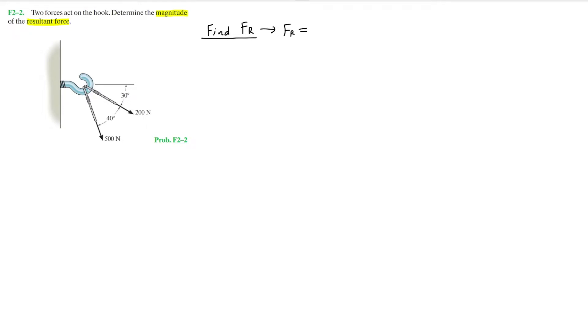And over here, let's call the 500 Newton force F1 and the 200 Newton force F2. So hence, Fr equals F1 plus F2. And since they are forces, we're dealing with the addition of vectors.